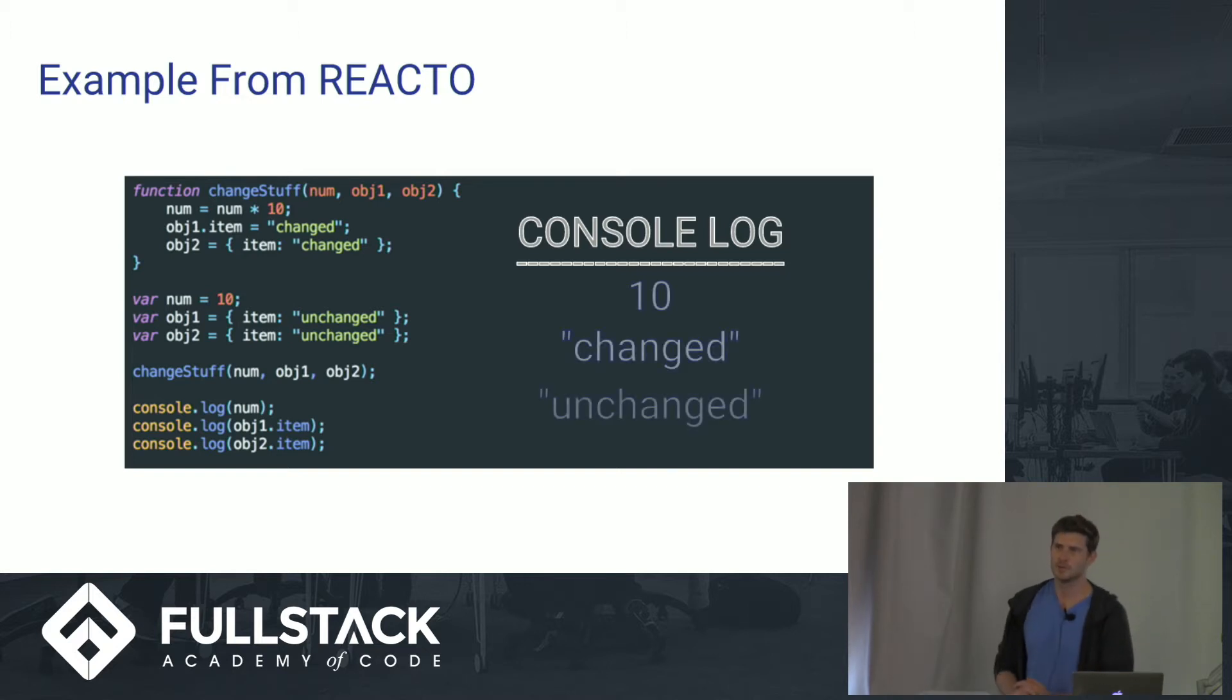And I think most people understood the pass by value here. Where it got hairy was when we were looking at and trying to set the item properties for object 1 and object 2. And that's what I'm going to be explaining today. And I hope I can get all of your hands up by the end of this. So let's go ahead and jump in.